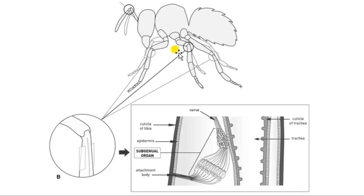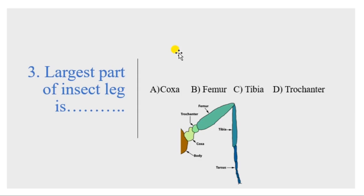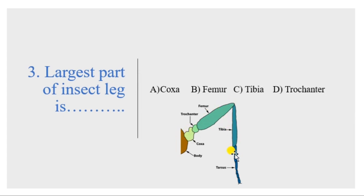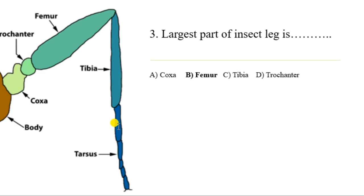Third question: the largest part of the insect leg. The insect leg has five important segments: coxa, trochanter, femur, tibia, and tarsus. The largest part of the insect leg is the femur.